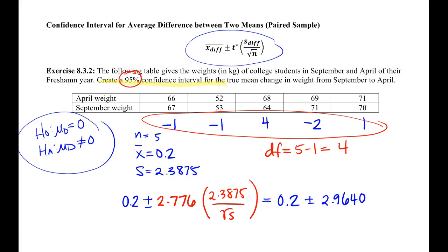Now, if we do that, we're going to end up with a negative 2.7640 to a 3.9640.